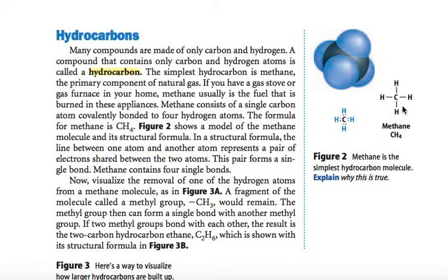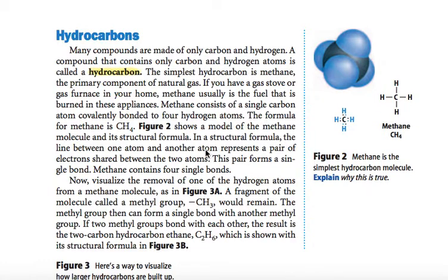Here is the drawn-out formula of those dot diagrams. These lines refer to the covalent bonds happening between the carbon and hydrogen. In a structural formula, the line between one atom and another represents a pair of electrons shared between the two atoms — you can see the two dots, and the line represents that they're sharing those atoms in a covalent bond. This pair forms a single bond. Methane contains four single bonds.